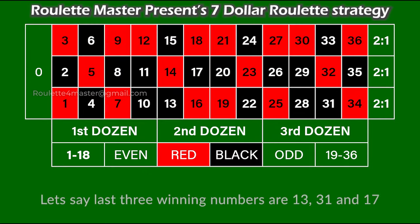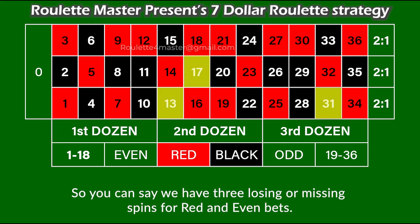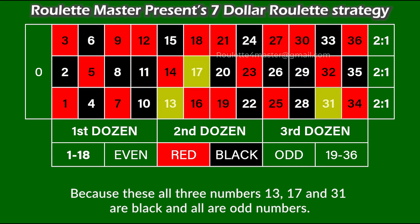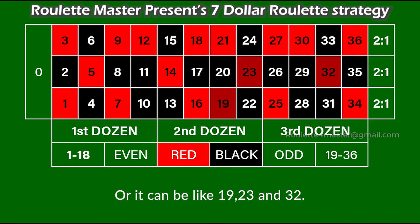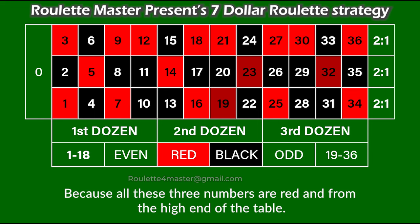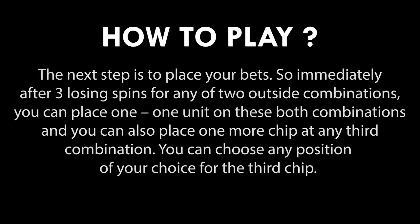By losing spins we mean the missing spins for that particular outside bet — when you will lose that bet. For example, let's say the last three winning numbers are 13, 31, and 17. You can say we have three losing or missing spins for red and even bets, because all three numbers are black and all are odd. Or it can be like 19, 23, and 32 — three missing spins for black and low end numbers, because all three are red and from the high end of the table.